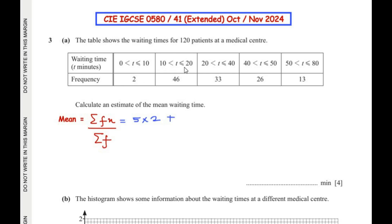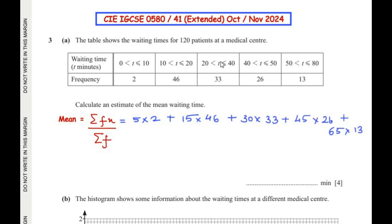For the next class interval, 10 to 20, the midpoint is 10 plus 20 = 30, divided by 2 = 15, multiplied by its frequency of 46. Repeating the same process for the remaining intervals: the third class interval has midpoint 30, so 30 × 33, plus 45 × 26, plus 65 × 13. This entire sum forms the numerator, which will be divided by the total frequency of 120.